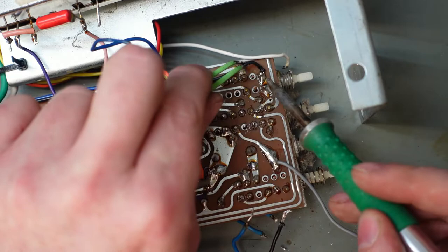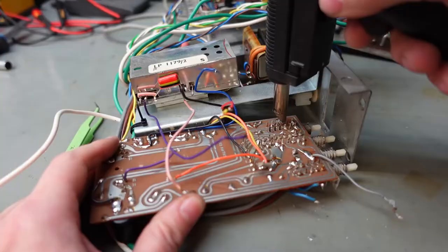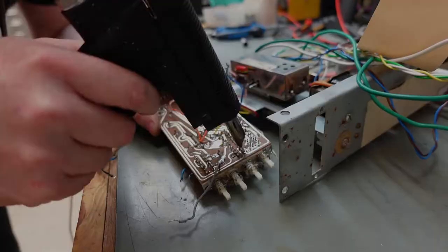This black wire here, off you come. This desoldering tool is quicker, but there's a lot of desoldering to do here, so I'll speed this up about five times.